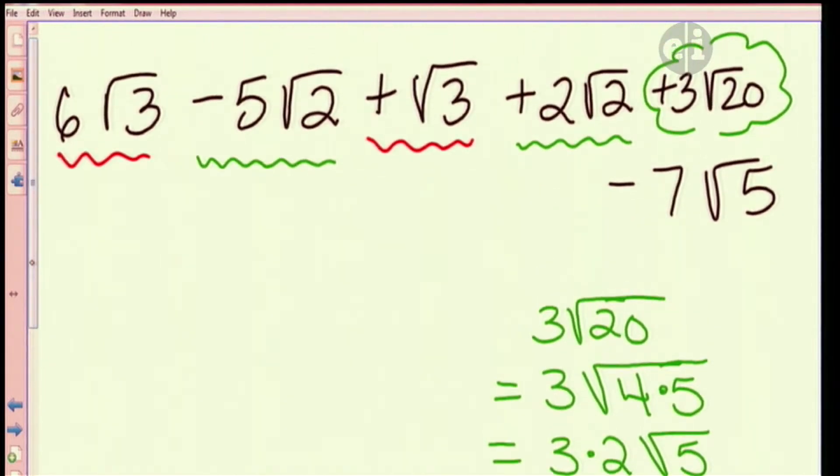Mm-hmm. Okay. So let's go ahead and since we're doing this on the board, I'm going to replace that with six radical five. All right. And can I combine that six radical five with anything? With negative seven radical five. Awesome. Okay. So let's put this all together and see if we can come out with a final answer now. You ready?